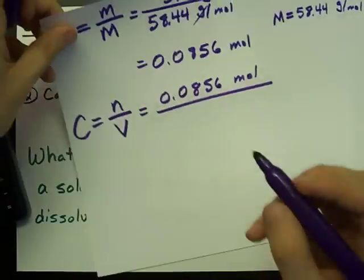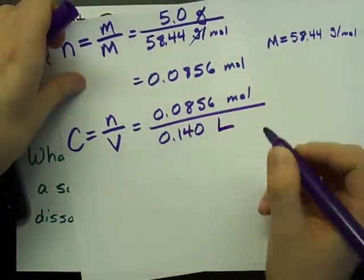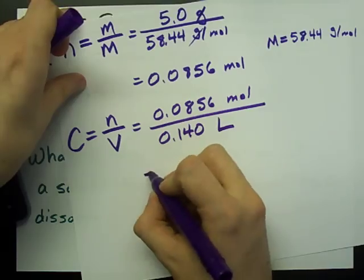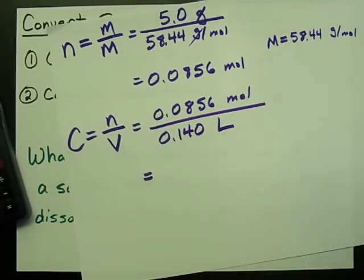My volume, 140 milliliters, is 0.140 liters. I convert it to liters because I want a concentration in moles per liter. It's a chemistry standard. Just do it.